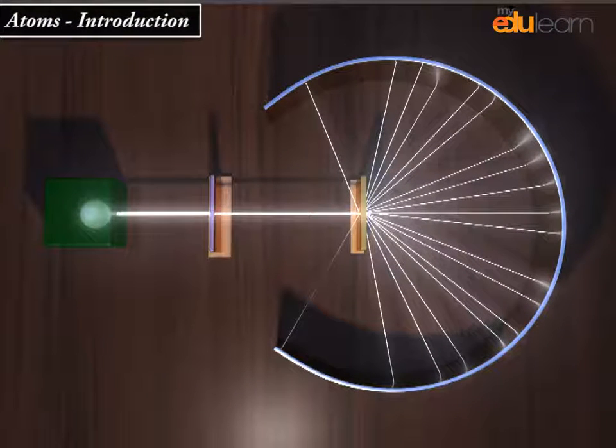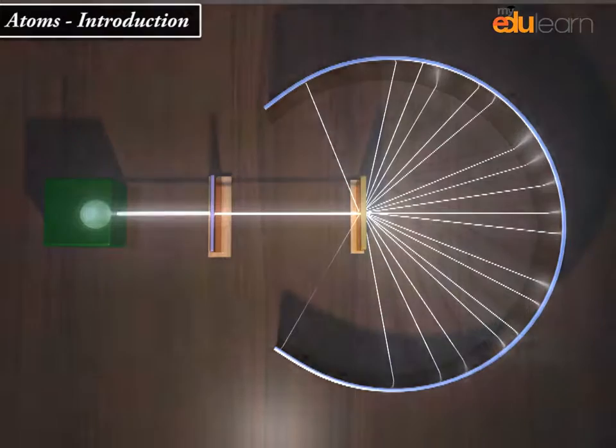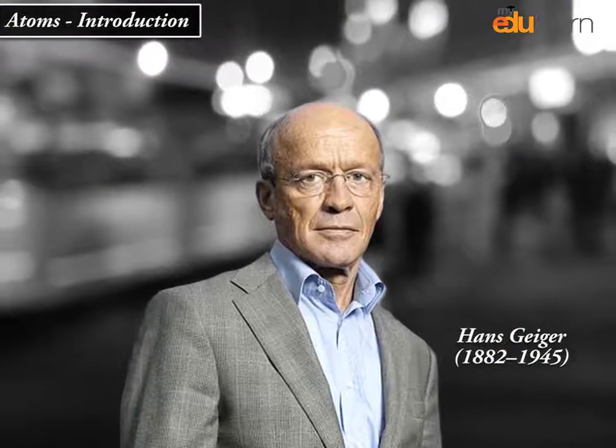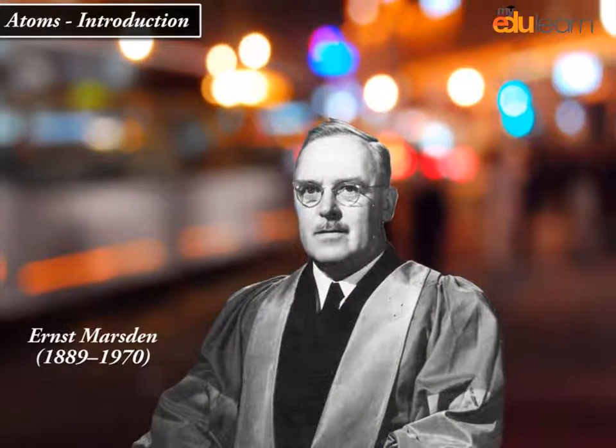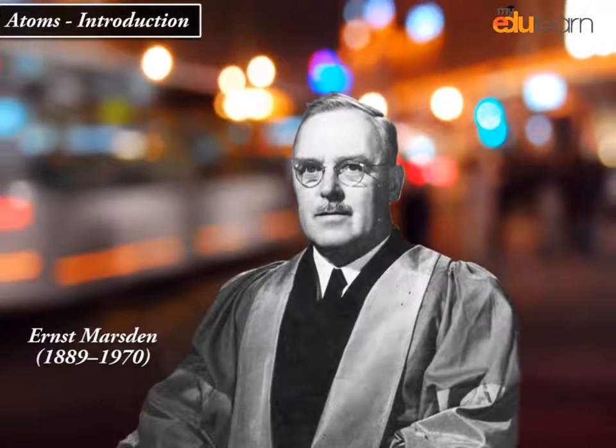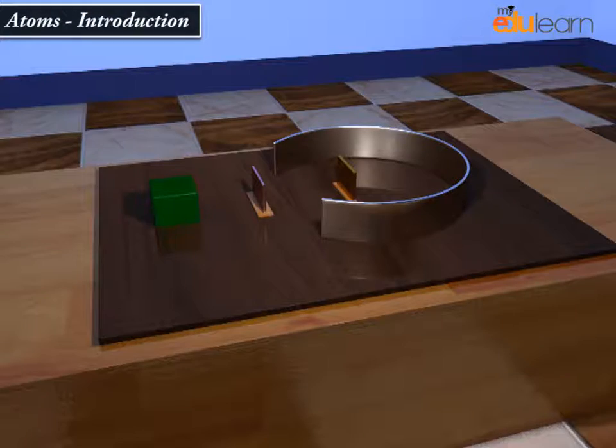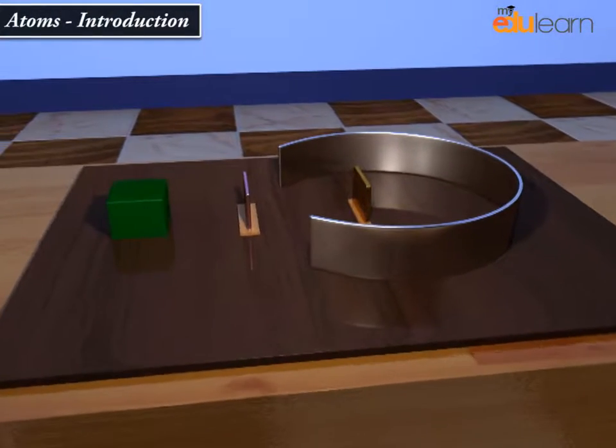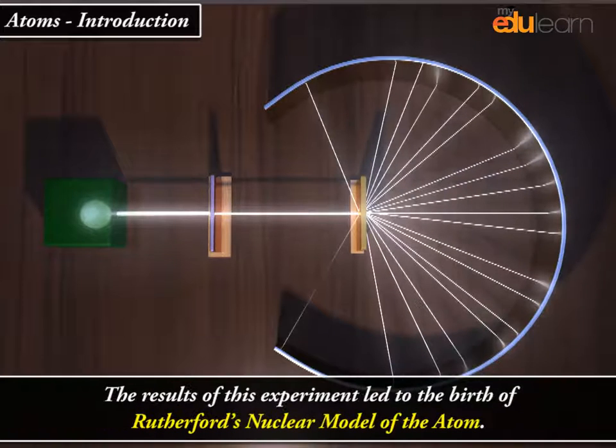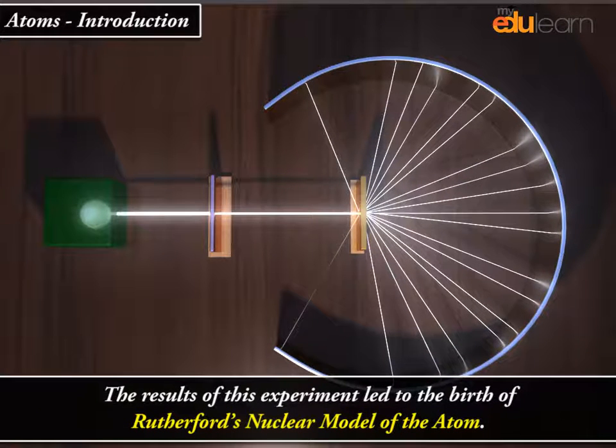An experiment of scattering of alpha particles by atoms was performed by Hans Geiger (1882 to 1945) and Ernst Marston (1880-1970). Scattering experiment gave totally unexpected results. The results of this experiment led to the birth of Rutherford's nuclear model of the atom.